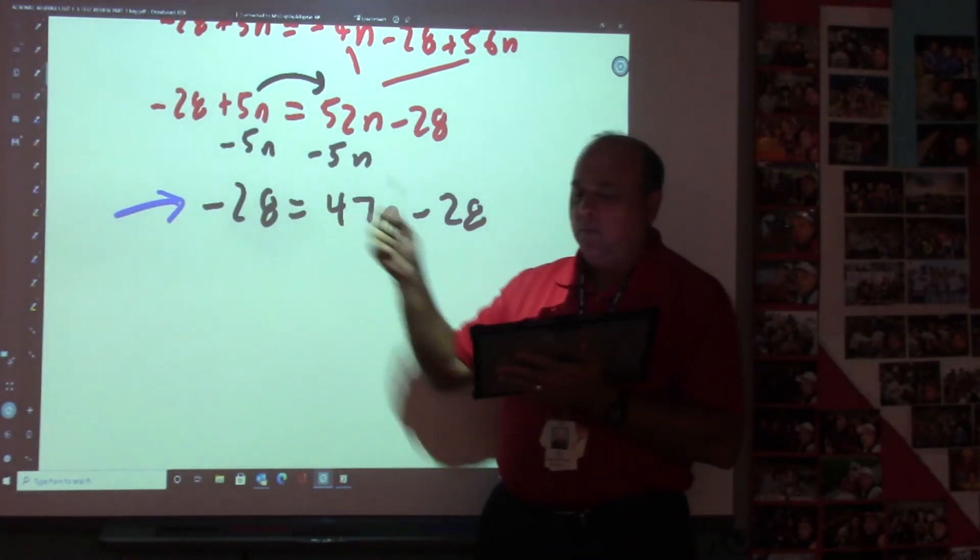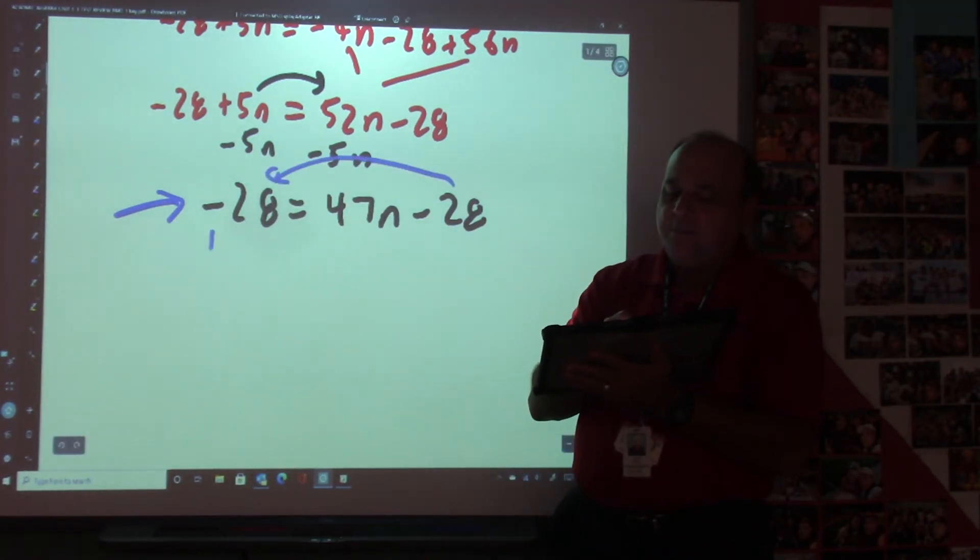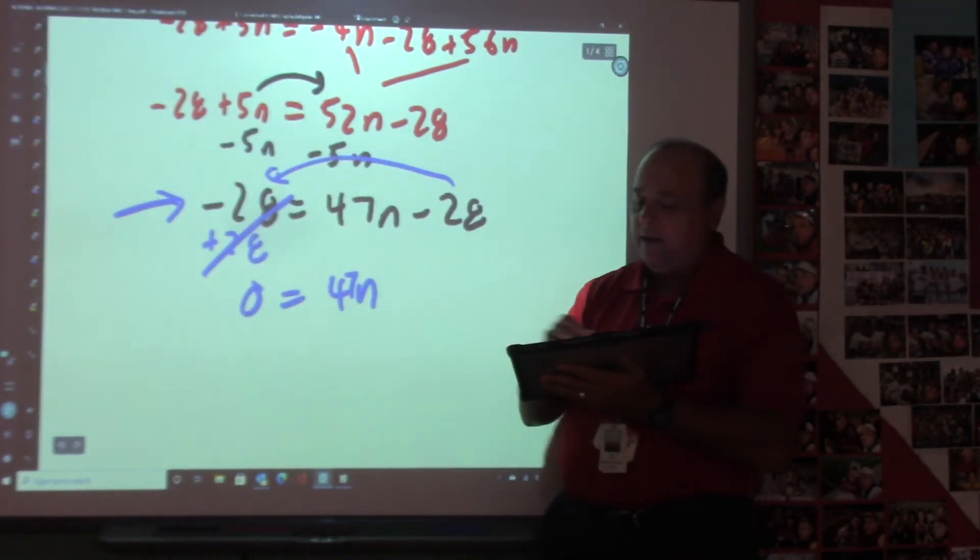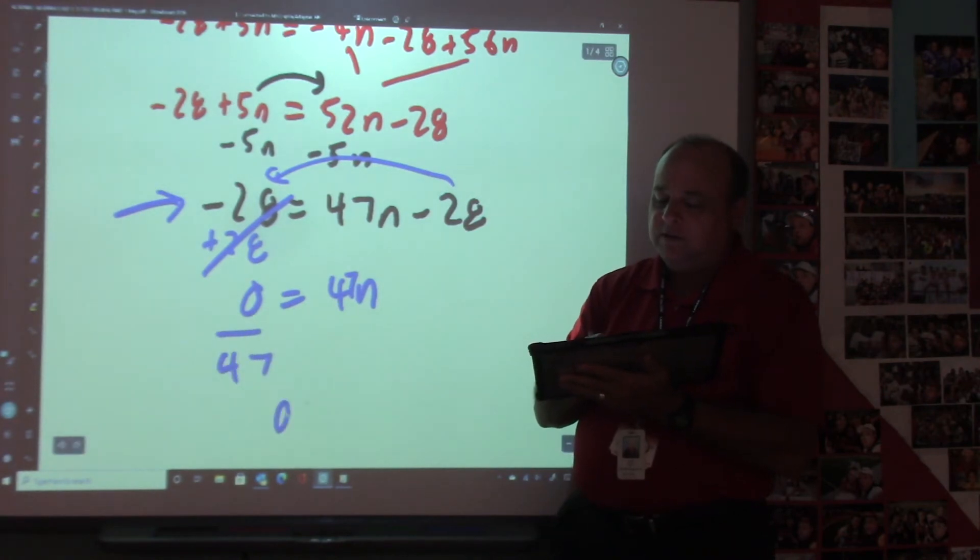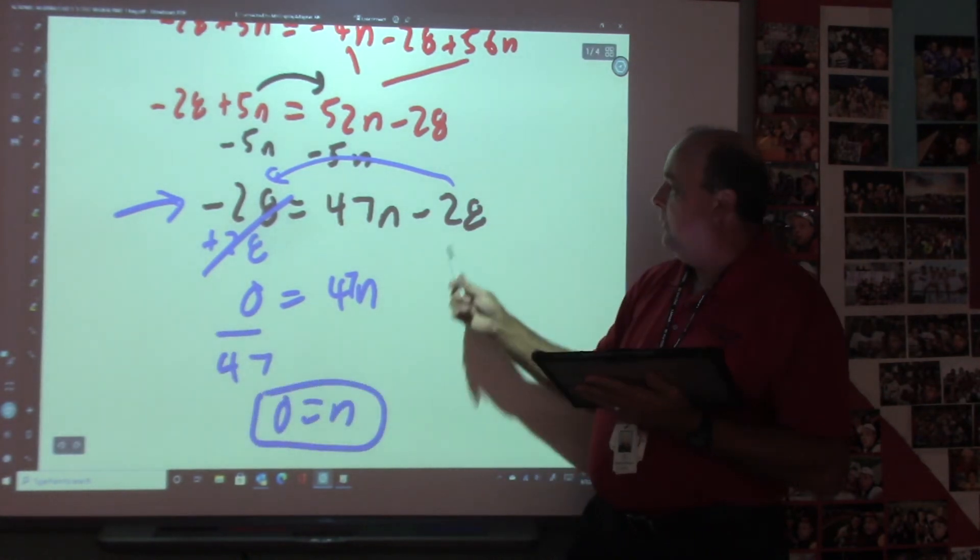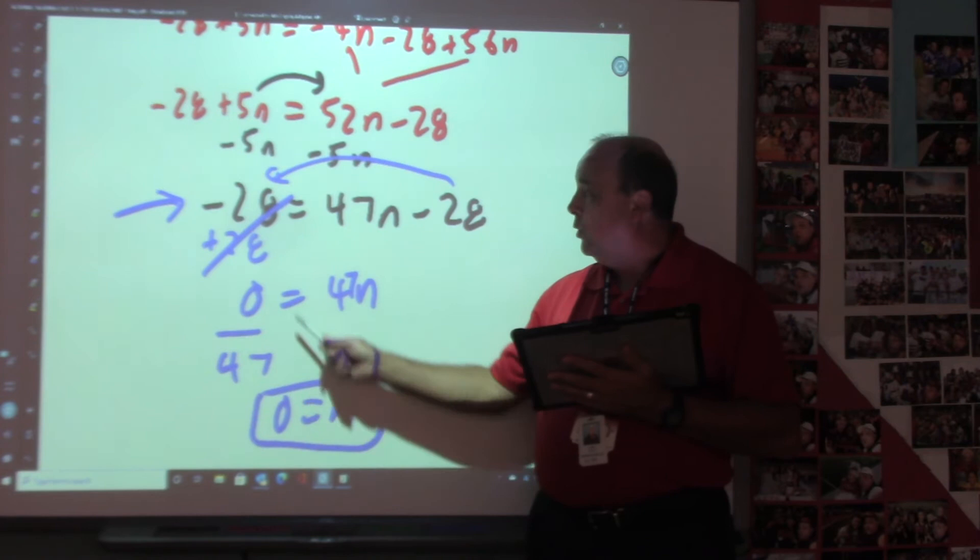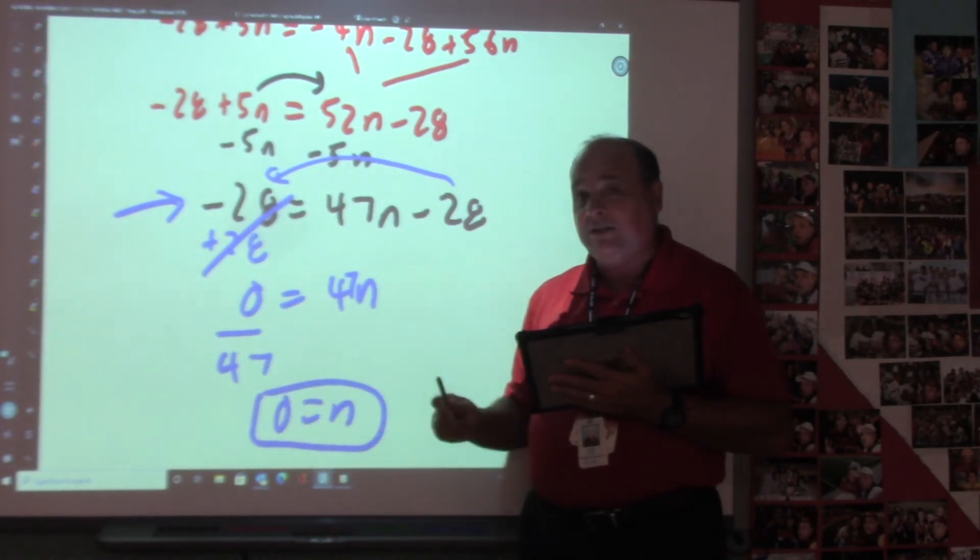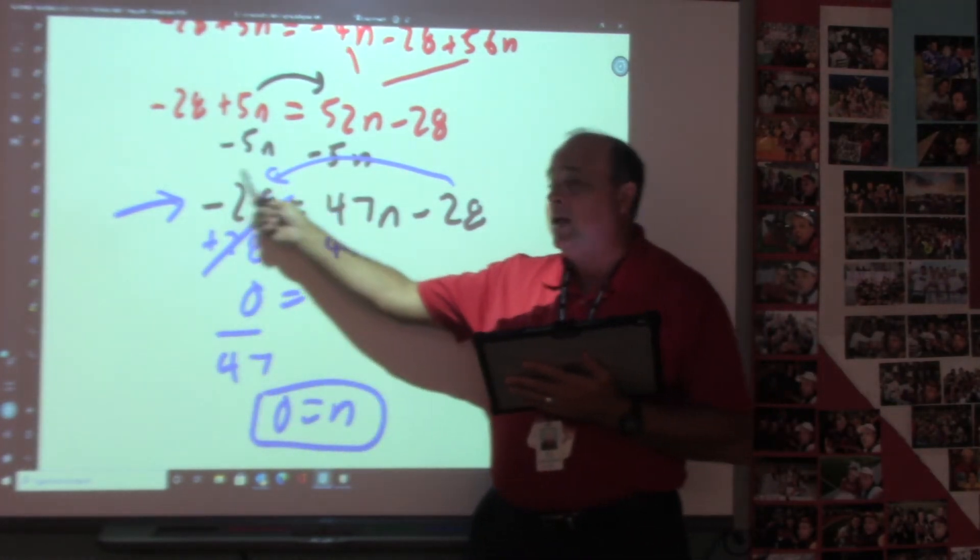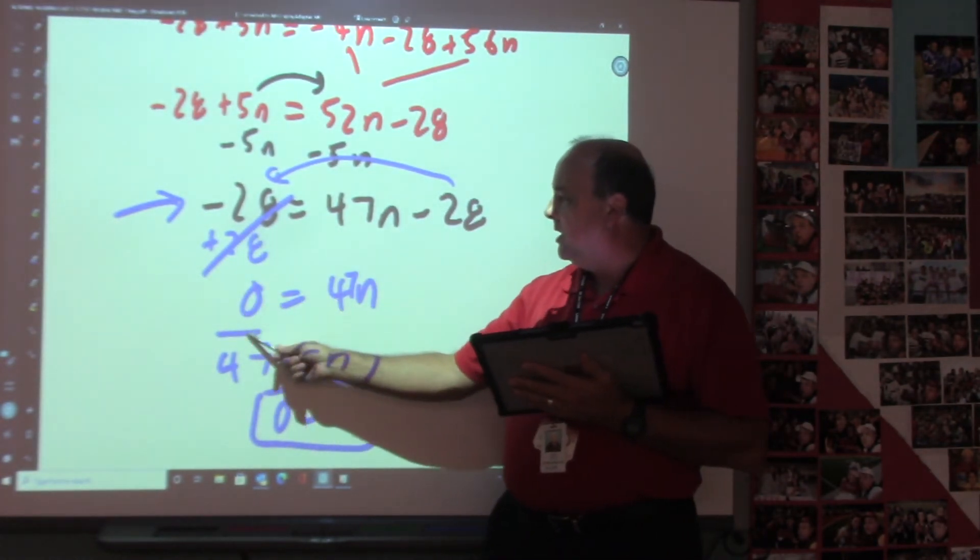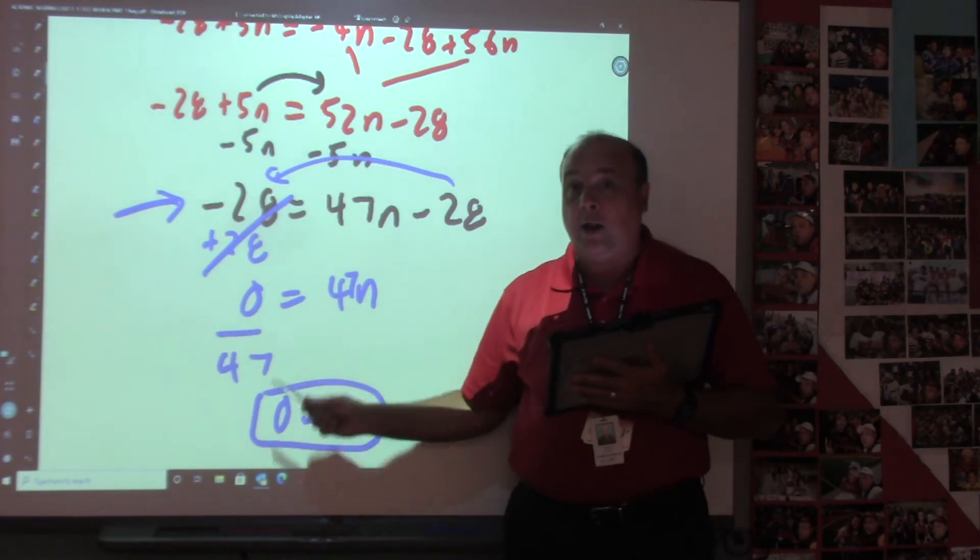So we're going to take this number and move it across. And what's going to happen to the 28s? They're going to cancel out. If the letters cancel out, then you're going to do 0 divided by 47, and you will get 0. So if your numbers cancel out, but you still have a letter, and your answer's not no solution or all real numbers, it's going to be 0, because you're going to punch 0 divided by 47. So on this problem, you would punch -28 in the calculator. You would punch +28, and then you would hit divide by 47, and your calculator would say 0.